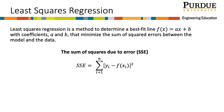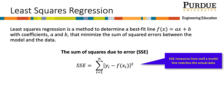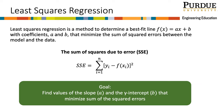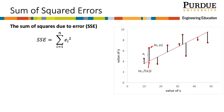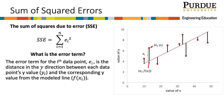The sum of squares due to error, or SSE, measures how well a model line — in our case f of x — matches the actual data. The goal of least squares regression is to find the values of the slope and y-intercept of a line that minimize the sum of squared errors. The error term for the ith data point, e sub i, is the distance in the y direction between each data point's y value, y sub i, which is the actual y value of the point, and the corresponding y value for the modeled line, f of x sub i, which is the expected y value which comes from the modeled line.